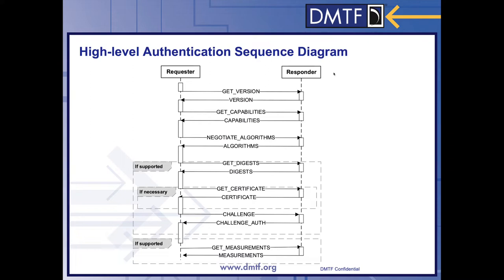To perform authentication or attestation, SPDM recommends this flow. There are two SPDM endpoints that communicate with each other — they are the requester and responder. To start the communication, the requester sends get version and the responder responds with a version. This request and response pair discovers all the versions supported by the responder, and the requester selects which version to use for the remainder of the SPDM communication. It also allows for interoperability and compatibility of different versions of SPDM requesters and responders.